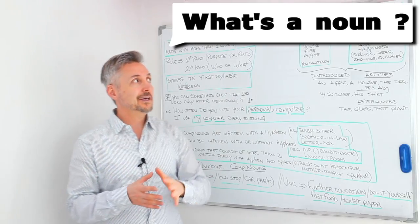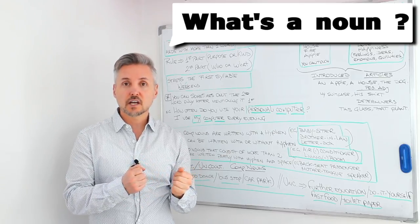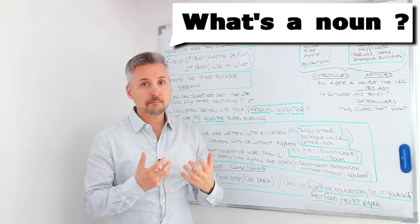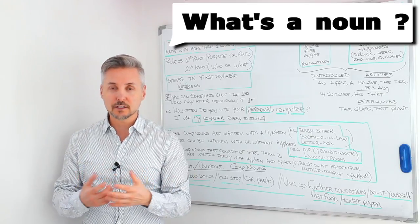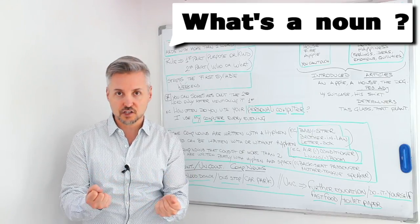An abstract noun is, for example, nature, love, happiness. There are feelings, ideas, emotions, qualities. Things that you cannot touch.